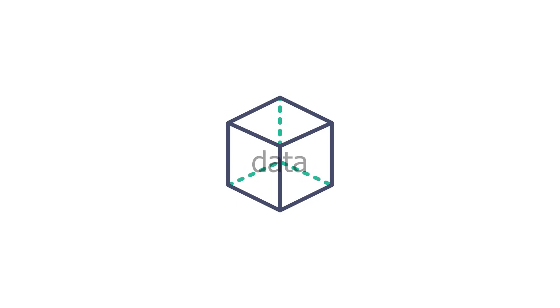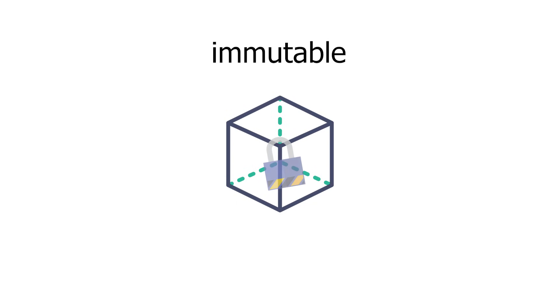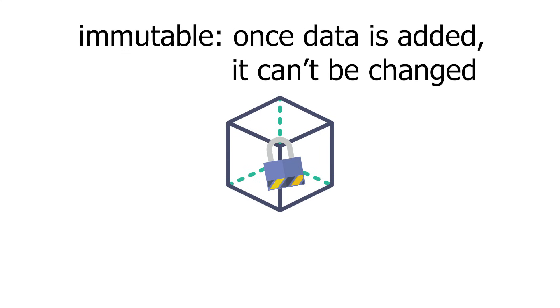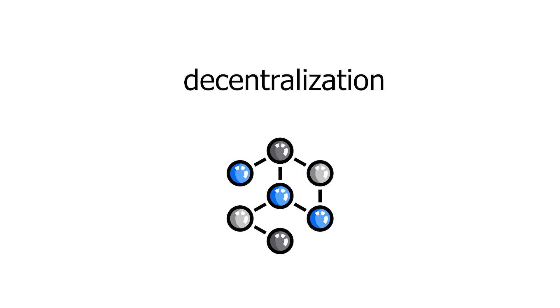Once data is added to a blockchain it's ideally immutable — pretty much this means that once we add data it's stored and almost impossible to change it. But how does it do this? To do this, blockchain relies on something called decentralization.